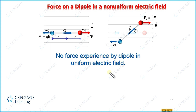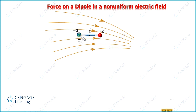Now let us place the dipole in a non-uniform electric field. You can observe here that at the position of the negative charge the density of the electric field lines is less, and at the position of the positive charge the density of the electric field lines is more. That means the electric field intensity at the position of the positive charge is greater than the intensity at the position of the negative charge. Therefore, the force experienced by the positive charge in the rightward direction will be greater than the force experienced by the negative charge in the leftward direction. That means in this condition the dipole will experience a net force — a dipole may experience force if it is placed in a non-uniform electric field.